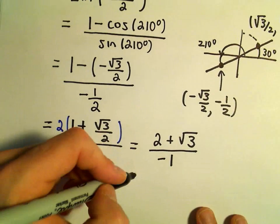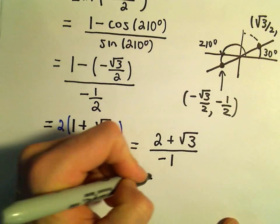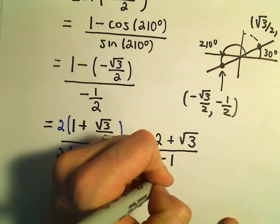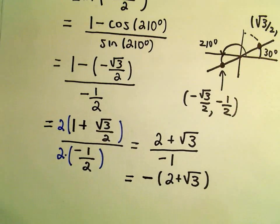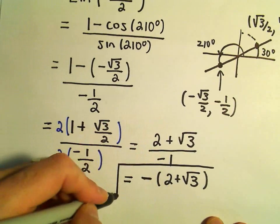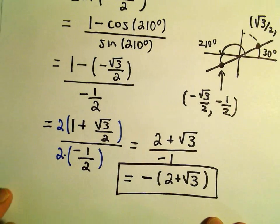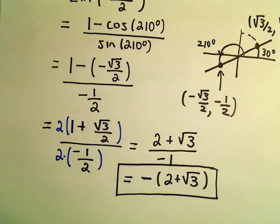You can always distribute that negative. I'll just pull it out front and say we have negative 2 plus square root of 3. And I think there's not much else you can really do there. You can always turn it into a decimal, but this is a nice exact answer. So, I think I'm going to leave it just like that.